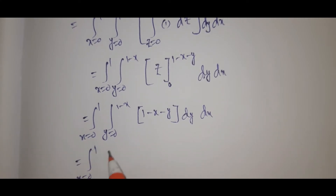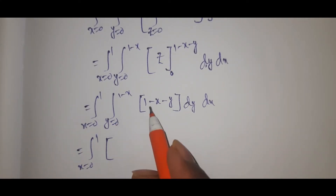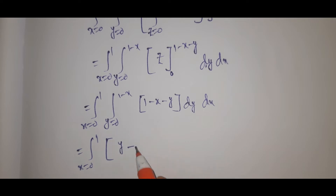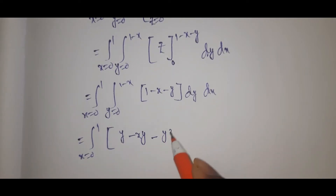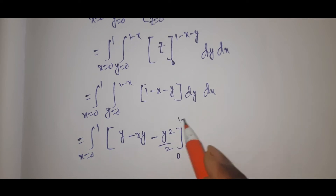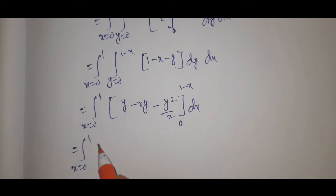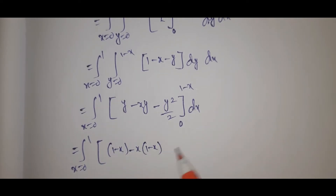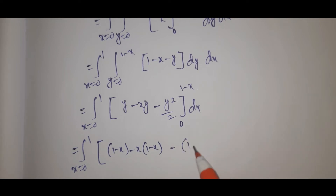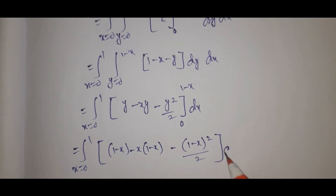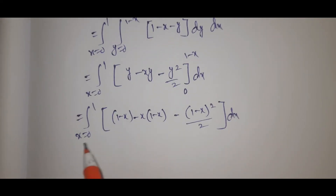That is integral x equals 0 to 1, y equals 0 to 1 minus x. Upper limit 1 minus x minus y, lower limit 0, equals dy dx. Now integral 1 dy gives y minus y squared by 2, from 0 to 1 minus x. Apply upper limit y equals 1 minus x: 1 minus x minus x times 1 minus x minus 1 minus x whole square by 2, into dx.